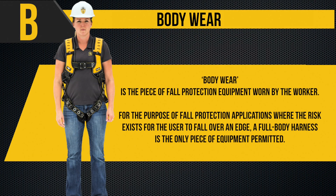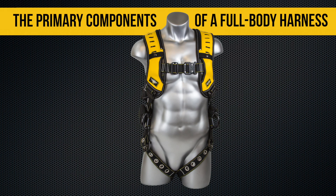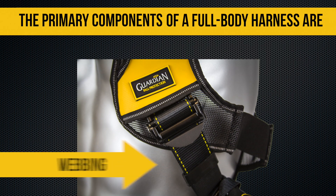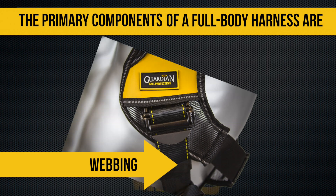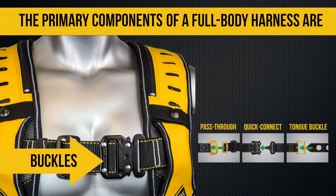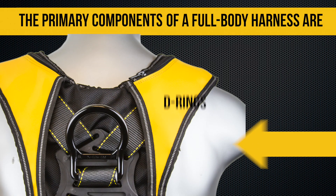Bodywear is the piece of fall protection equipment worn by the worker. For fall protection applications where the risk exists for the user to fall over an edge, a full body harness is the only piece of equipment permitted. The primary components of a full body harness are webbing, buckles, and D-rings.